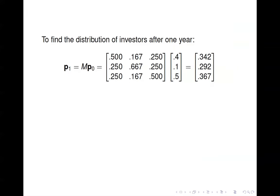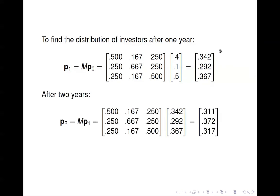To find the distribution after one year, we multiply the transition matrix by the current state vector (0.4, 0.1, 0.5) to get the new distribution. After two years, we multiply the transition matrix by the one-year distribution. We can keep doing this for as many years as we're interested in.